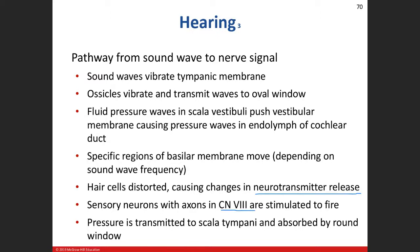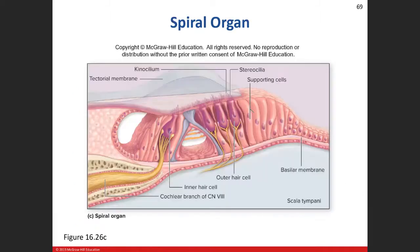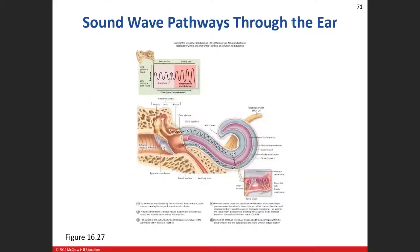Those action potentials travel down the sensory neurons toward our vestibulo-cochlear nerve, cranial nerve VIII. As those pressure waves transmit through the basilar membrane, they travel down into the scala tympani, and eventually exit back toward the round window. You can see on the picture: sound waves travel through the scala vestibuli, irritate the vestibular membrane and spiral organ, move the basilar membrane, and the pressure wave exits back toward the middle ear through the round window.